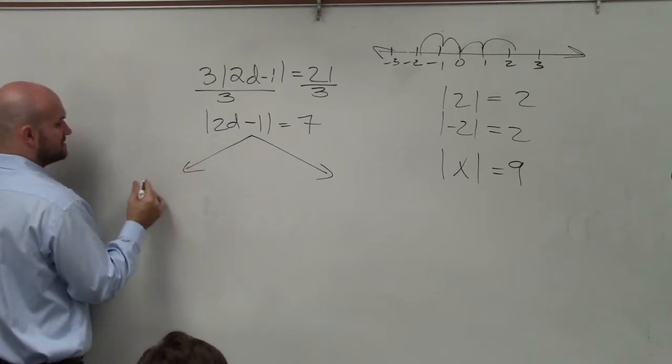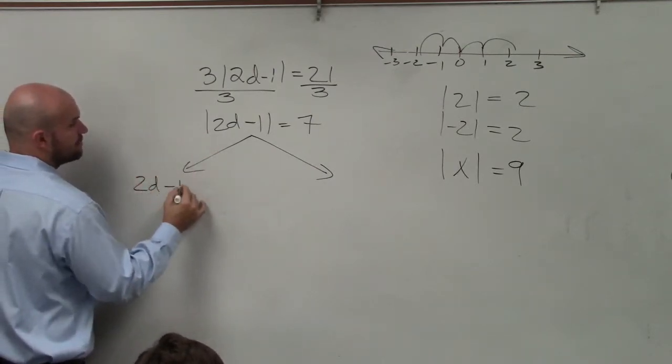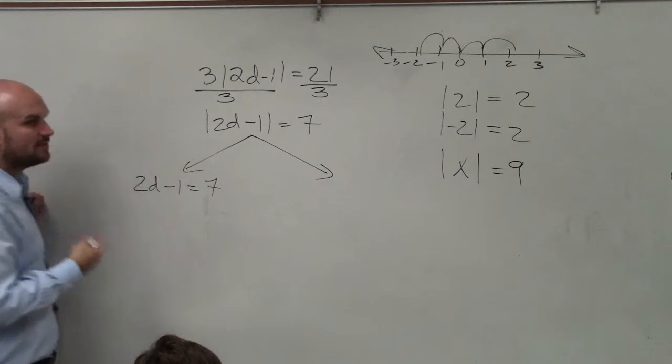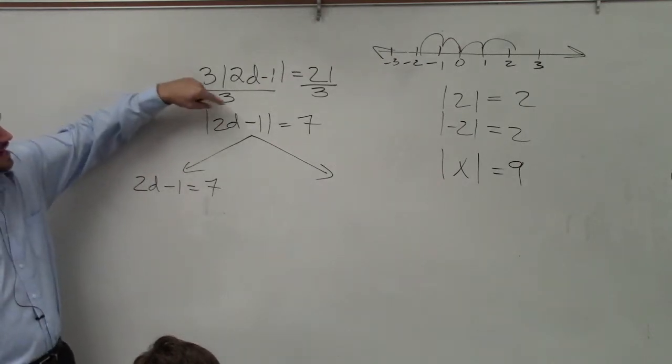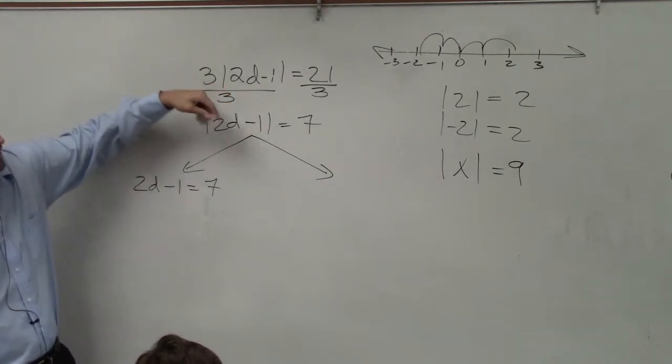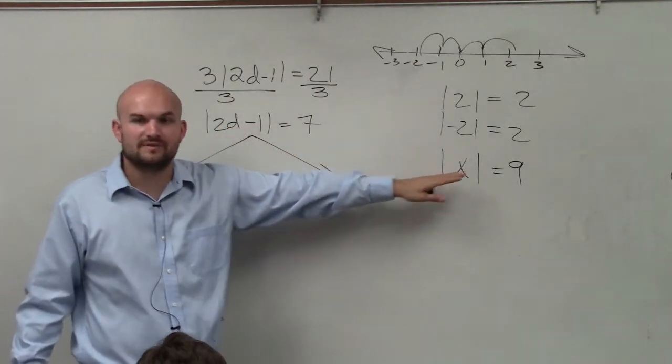So for the positive in this case, I'm going to have 2d minus 1 equals 7. Notice how when I'm writing these two cases, I do not have to write in the absolute value, because now I'm solving for the positive and the negative.